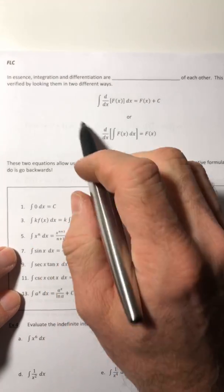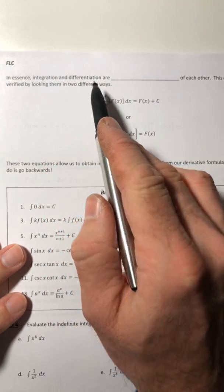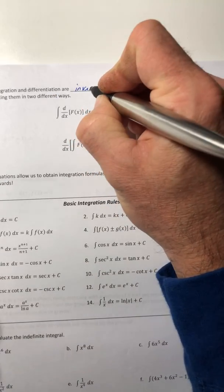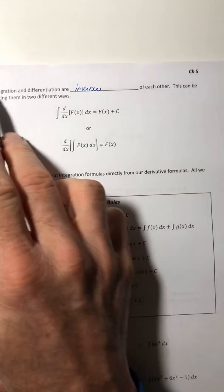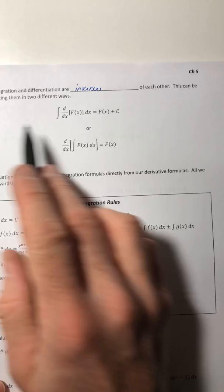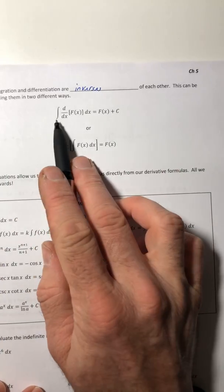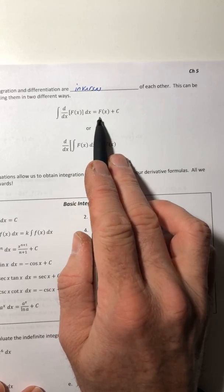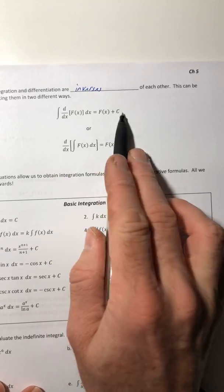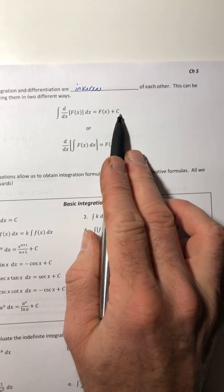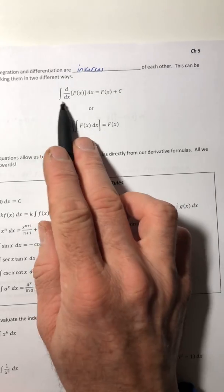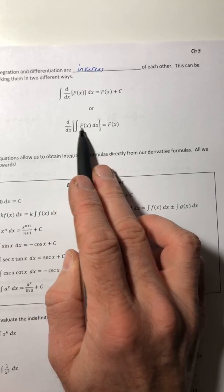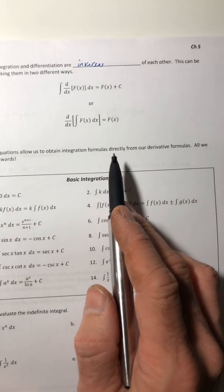So when integration and differentiation are inverses of each other, because one of them goes one direction and the other one just reverses it. So you can see that in two different ways. So like if you integrated the derivative of a function, you should get the original function. But because you're integrating, you've got that plus c at the end of it. Well, if you switch the order, if you did the derivative of the integral of a function, you should get right back to the same function.